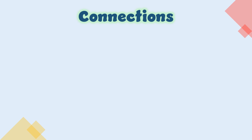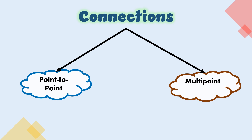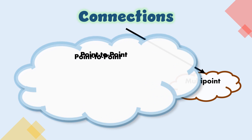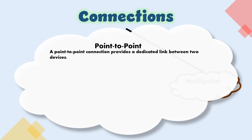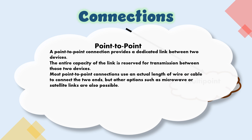For communication to occur, two devices must be connected to the same link at the same time. There are two possible types of connections. A point-to-point connection provides a dedicated link between two devices, with the entire capacity of the link reserved for transmission between those two devices. Most point-to-point connections use an actual length of wire or cable, but options such as microwave or satellite links are also possible.